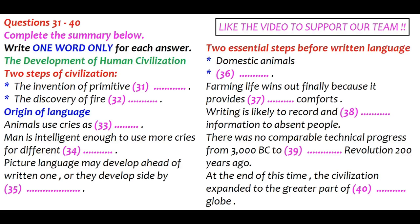Agriculture made possible an immense increase in the number of the human species in the regions where it could be successfully practiced. These were, at first, only those in which nature fertilized the soil after each harvest. Agriculture met with violent resistance from the pastoral nomads, but the agricultural way of life prevailed in the end because of the physical comforts it provided.